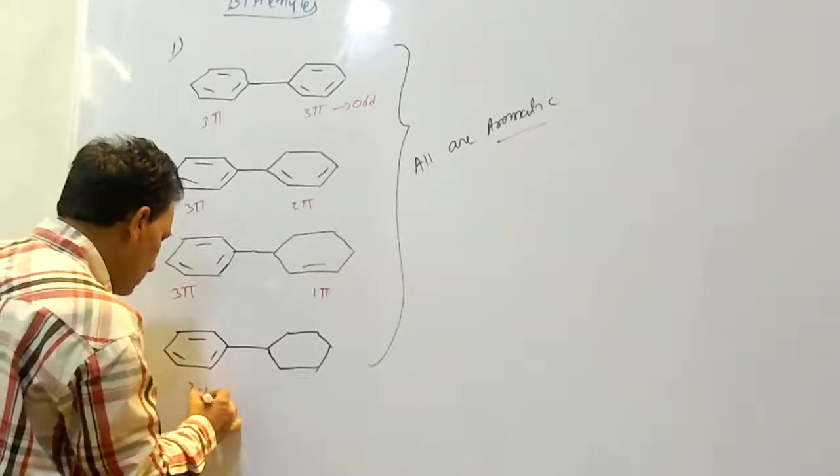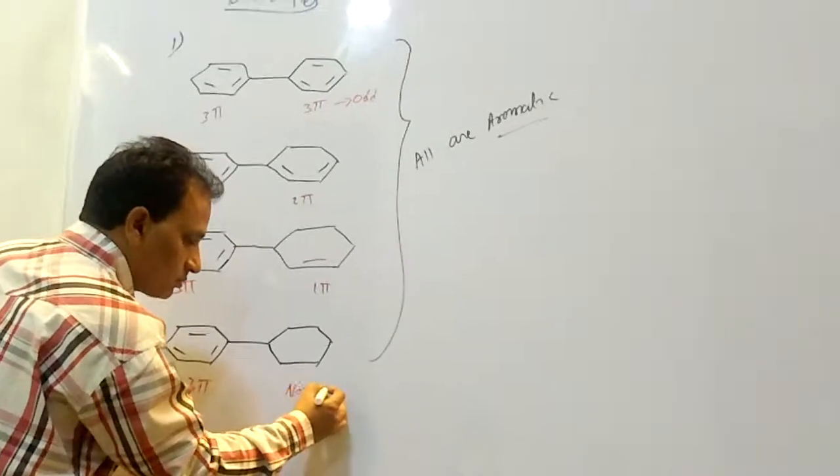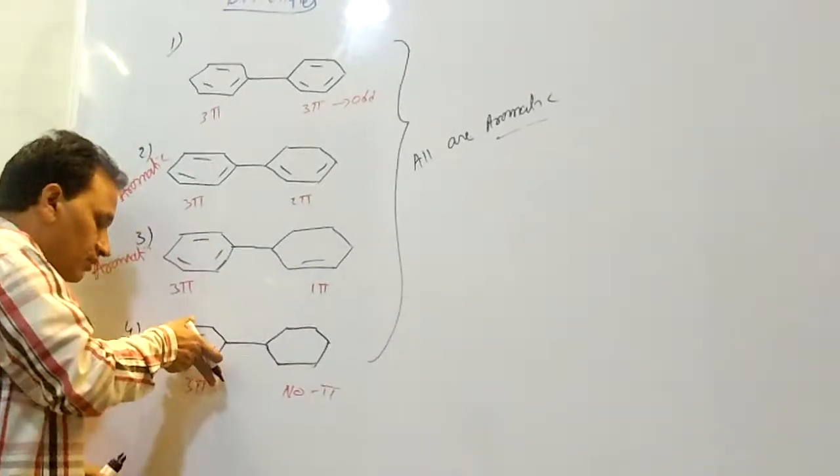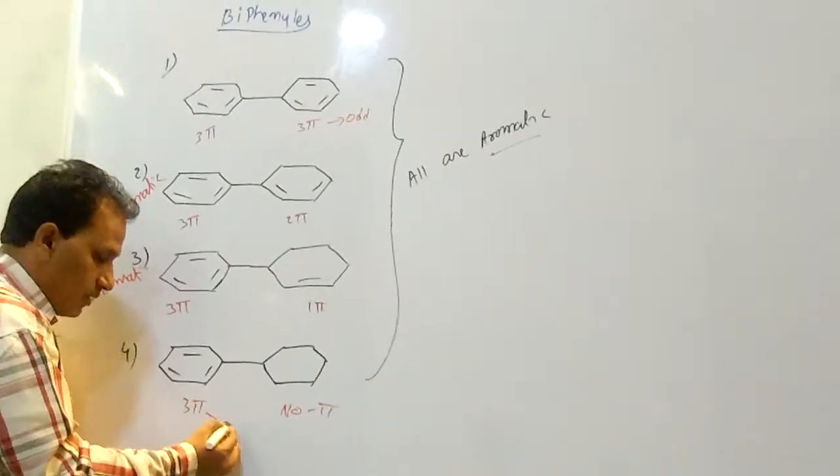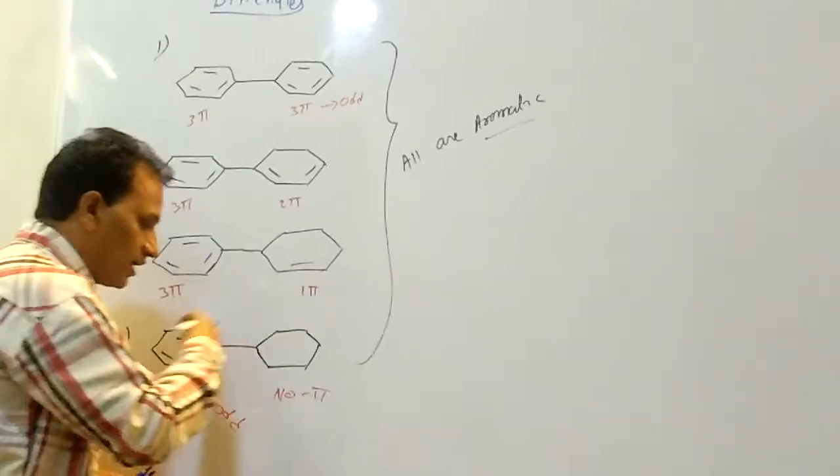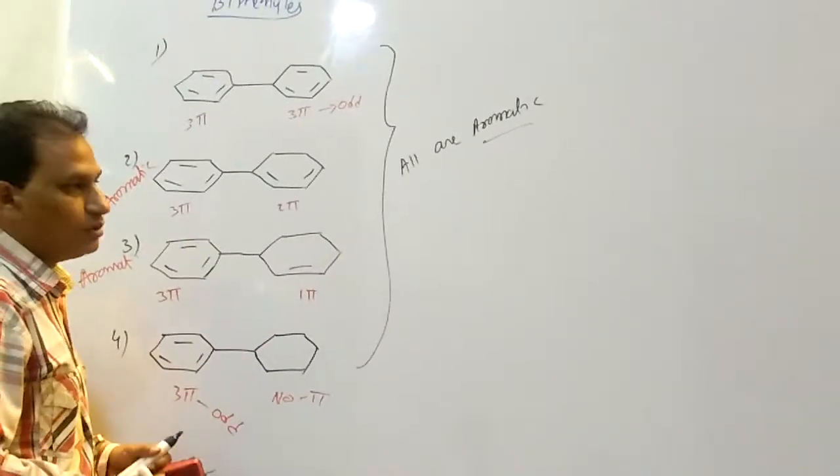Here 3 pi bonds, no pi bonds. But both are aromatic. Why? Because one compound contains pi bonds, odd number of pi bonds, that is aromatic. Then why is another compound also aromatic?